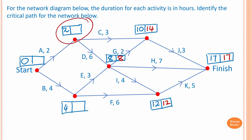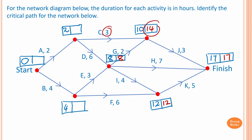To work out the latest starting time for activities C and D: fourteen minus three is eleven, and eight minus six is two. The smallest value is two, so we write two here — that is the latest starting time.